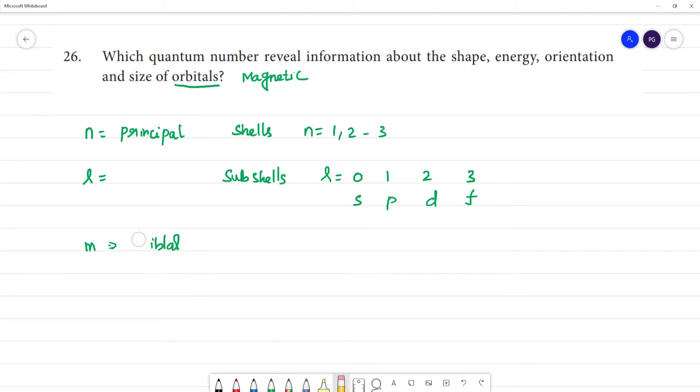Orbitals are represented by magnetic quantum number. So if l equals 1, then minus 1, 0, plus 1.